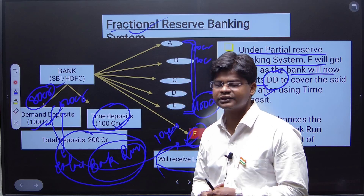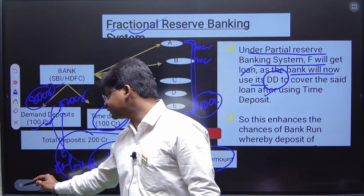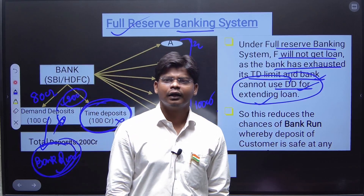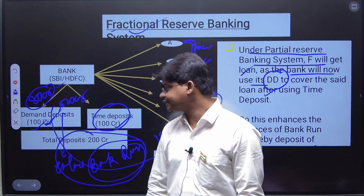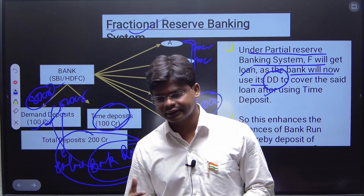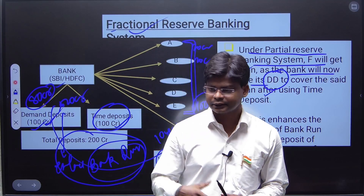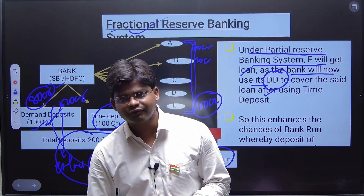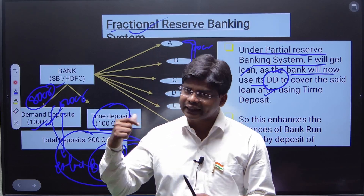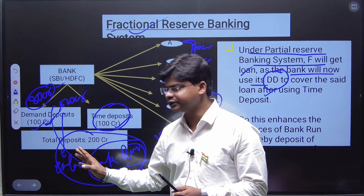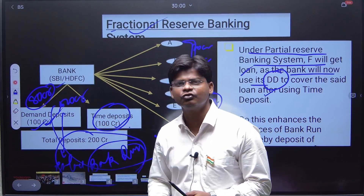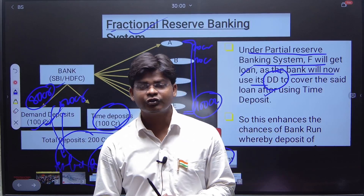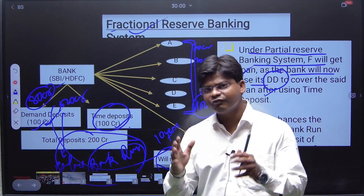The fractional or partial reserve banking system is followed in India, while the full reserve banking system is followed in developed countries. India uses fractional reserve banking because it is a developing country that needs more finance for sectors like agriculture and MSMEs. These sectors depend on bank loans, do not have much of their own capital, and form the backbone of India's economy. If Indian banks relied only on time deposits to finance customers, most people in agriculture and MSME segments would not get loans, hampering India's economic growth.